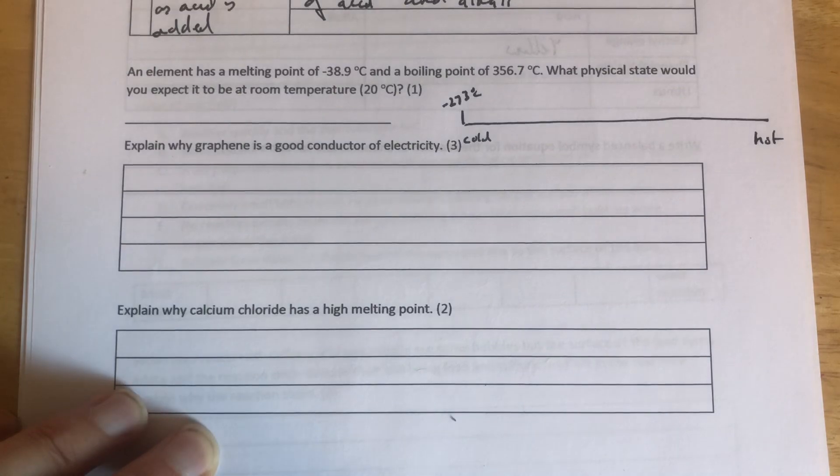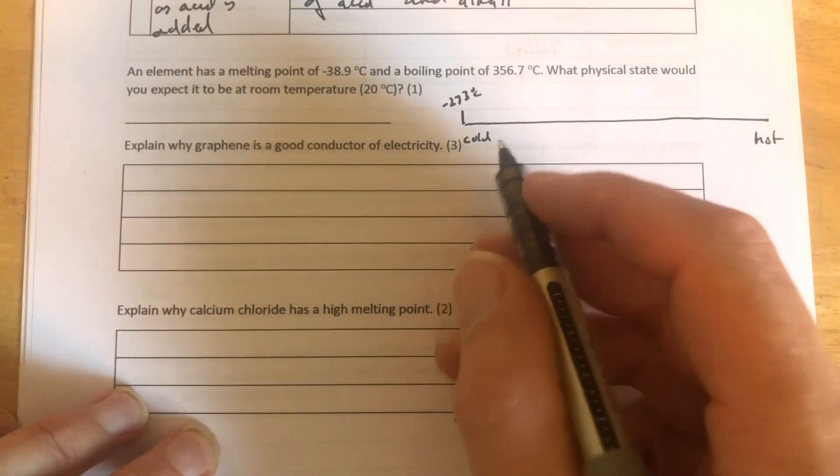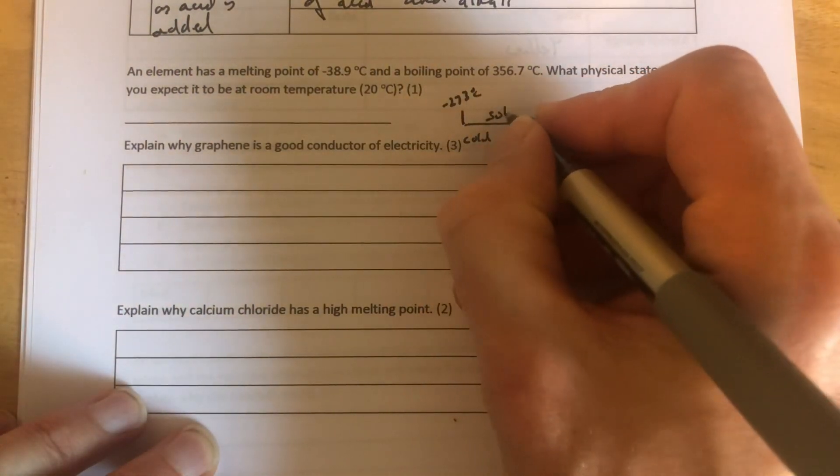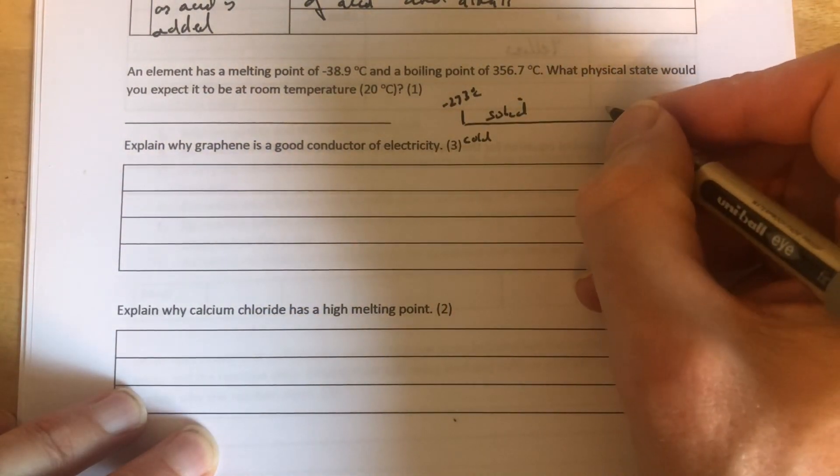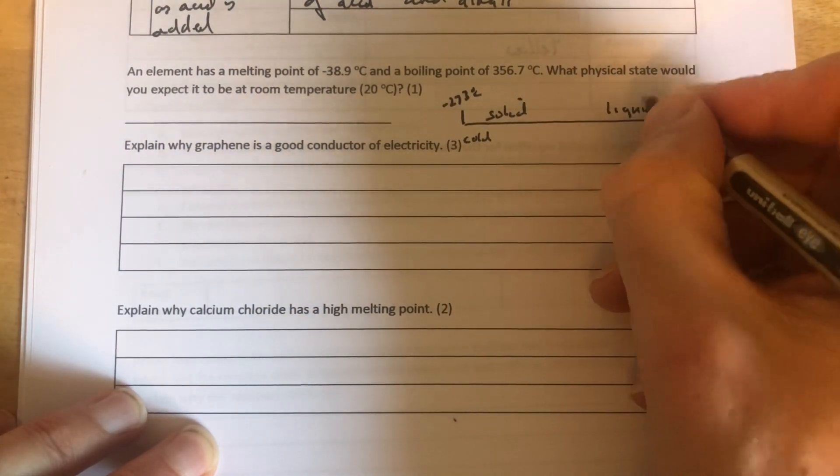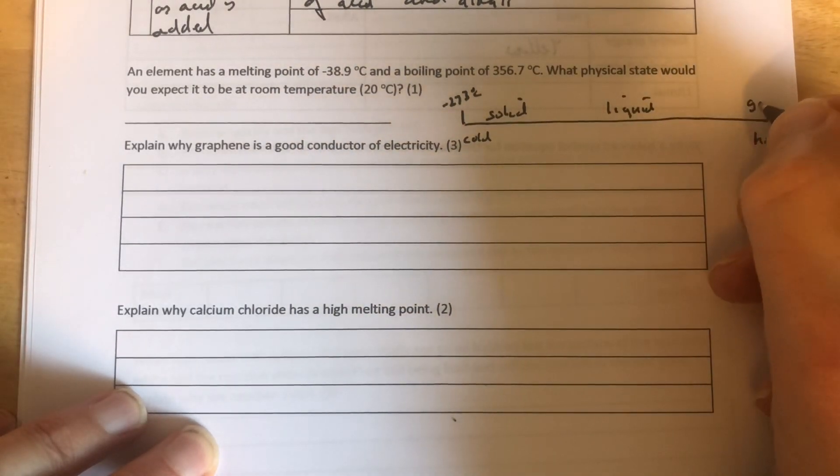There's three states of matter. When something is coldest, it's a solid, so we'll write solid next to the cold bit. And then if we heat it a bit, it'll turn into a liquid. And if we heat it a bit further, it turns into a gas.